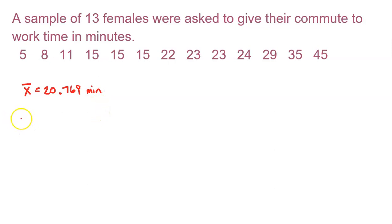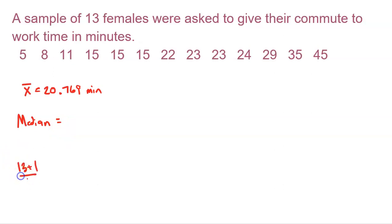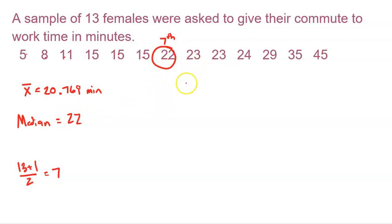What about the median? We don't really have a symbol for the median — we just write 'median.' I have 13 values already in order. Using the formula to locate the median: 13 plus 1 divided by 2 equals 7. So counting to the seventh value: 1, 2, 3, 4, 5, 6, 7 — the seventh value is 22. That's my median. 50% above it, 50% below it — it is the dead center of my data. So my mean is about 20.769 and my median is 22.